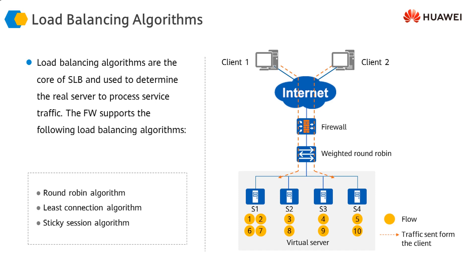With weighted least connection, the firewall forwards double the number of connections to a server with higher weight compared to servers with half the weight, still based on connection count. Weighted sticky session means the number of connections sent from any source to a server also depends on that server's weight — higher weight servers receive more connection requests.